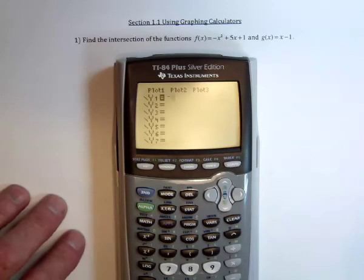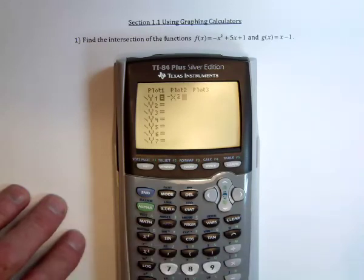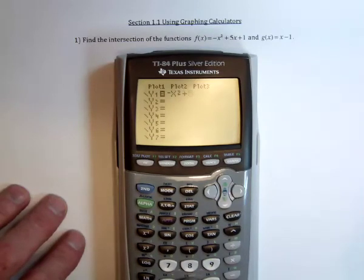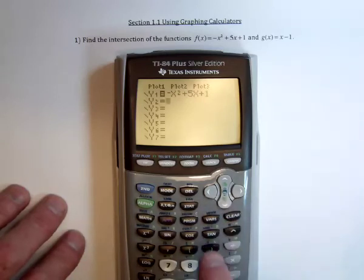So we've got negative x squared and then plus 5x plus 1. And for the second function it's x minus 1.